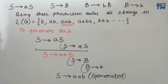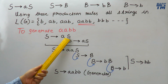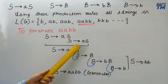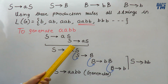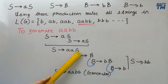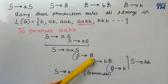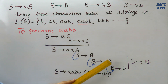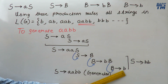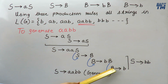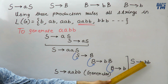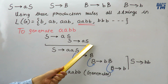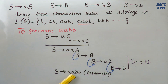Now to generate aabb, we again use S derives aS, and this S is replaced with S derives aS, giving S derives aaS. Now this S is replaced using non-terminal B. Then B is replaced using B derives bB, and this B is further replaced using B derives b. These steps give us S derives bb. Substituting back, we get S derives aabb — the fourth string is also generated.